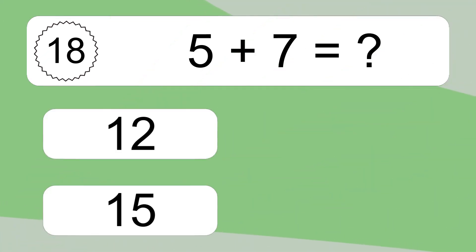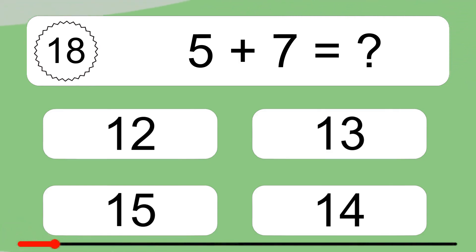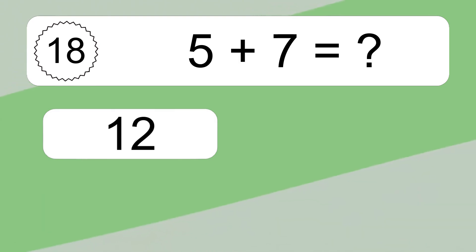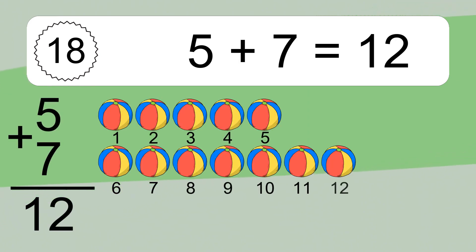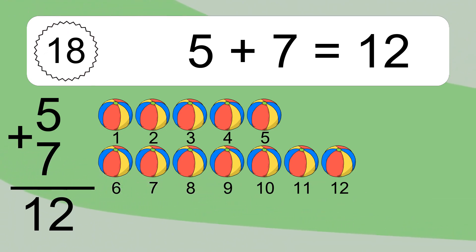5 plus 7 equals what? 5 plus 7 equals 12. Let's count it. 1, 2, 3, 4, 5, 6, 7, 8, 9, 10, 11, 12.